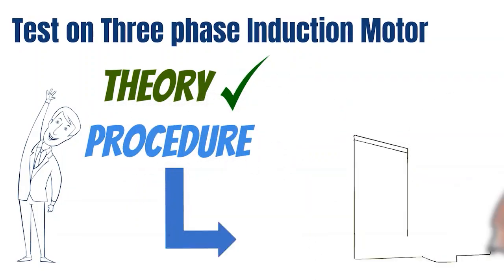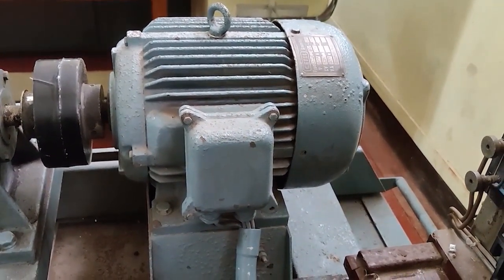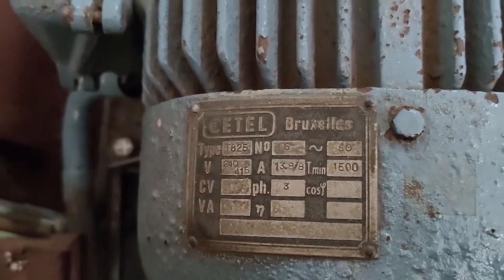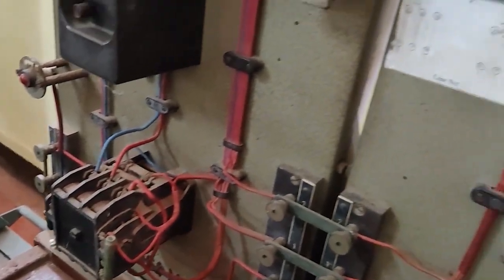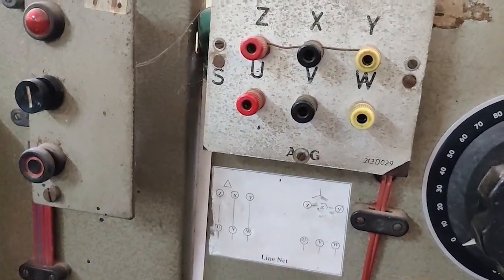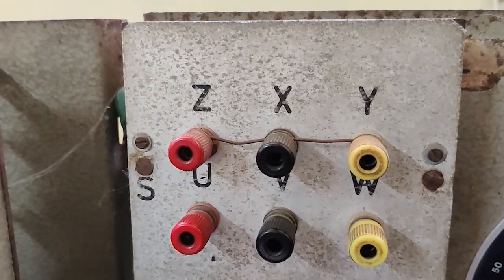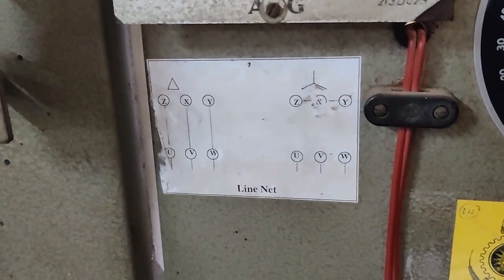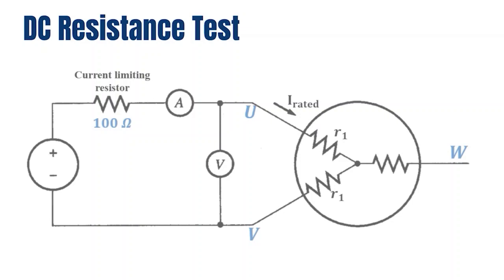Now let's go to the electrical machines lab to perform the tests experimentally. This is the induction motor we are going to test; here you can observe the nameplate data and the end terminals of the three windings. You can see the connection diagram: XYZ terminals are short-circuited to make the star connection neutral point, and UVW are the other terminals of the star-connected motor windings. First, the DC resistance test — observe this circuit carefully.